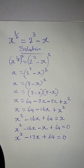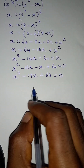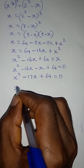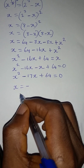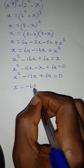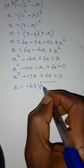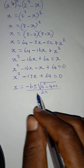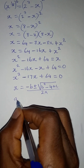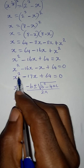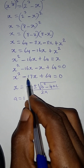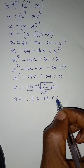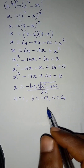We are going to solve this quadratic equation using the general formula method, which says x equals negative b plus or minus the square root of b squared minus 4ac, all over 2a. According to this equation, a is 1 (the coefficient of x squared), b is minus 17 (the coefficient of x), and c is 64 (the constant).